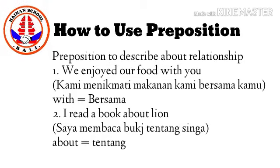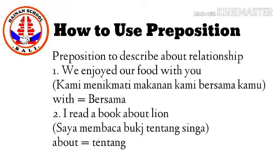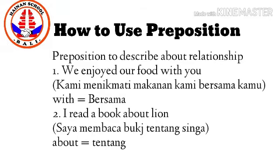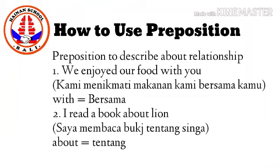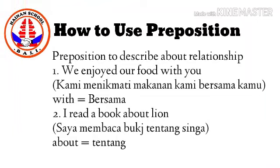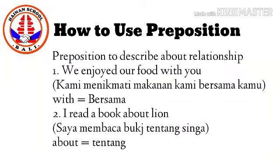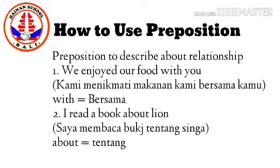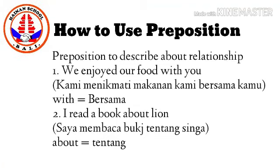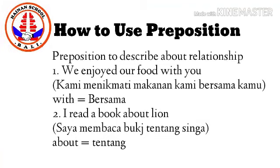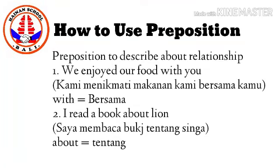Then the second example is: I read a book about lion. Pada contoh yang kedua, preposisi yang digunakan adalah 'about'. 'About' memiliki arti 'tentang' untuk menjelaskan tentang hubungan buku yang sedang dibaca.